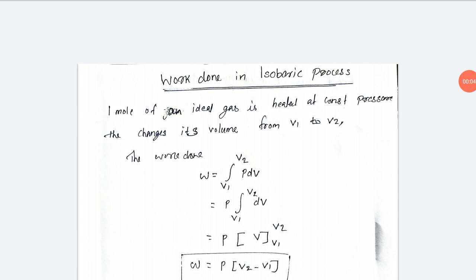Hi dear students, we are discussing work done in the isobaric system. What is constant in the isobaric system? Constant pressure. We have 1 mol of ideal gas.